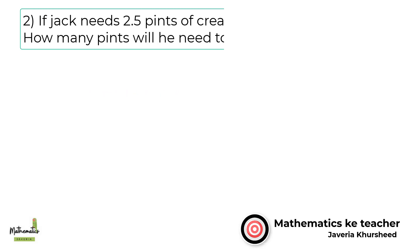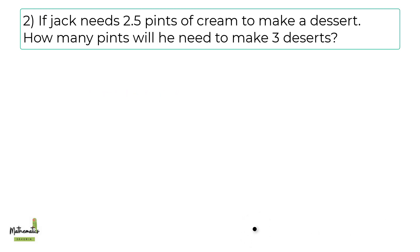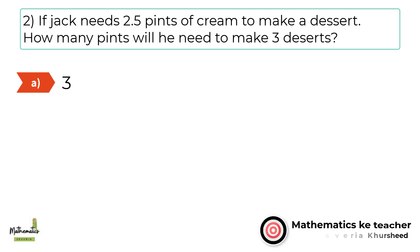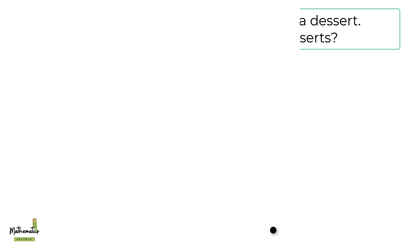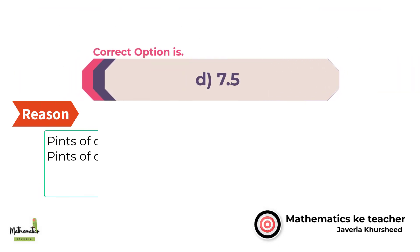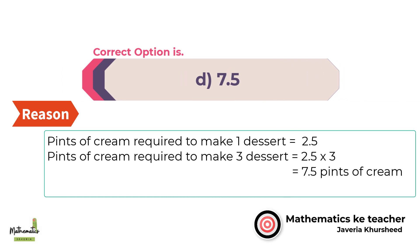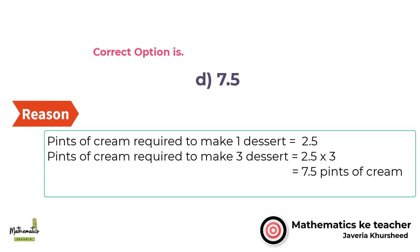Number 2. If Jack needs 2.5 pints of cream to make a dessert, how many pints will he need to make 3 desserts? A. Three. B. Four. C. 5.5. D. 7.5. Correct option is D. 7.5. Since pints of cream required to make 1 dessert equals 2.5, then pints of cream required to make 3 desserts equals 2.5 × 3 = 7.5 pints of cream.